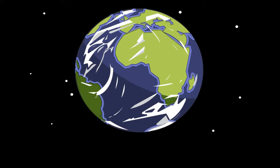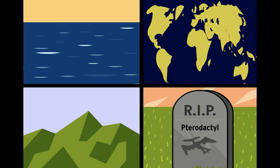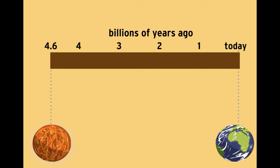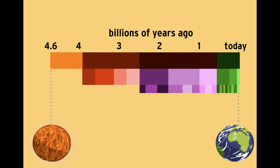Lots of changes have happened over that time: the oceans have formed, continents have moved, mountains have risen, and animals have evolved and gone extinct. To organize major changes, scientists have broken the Earth's timeline into sections lasting millions of years.